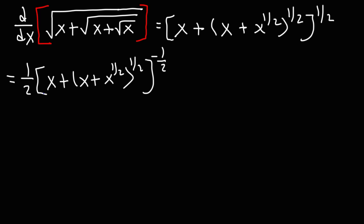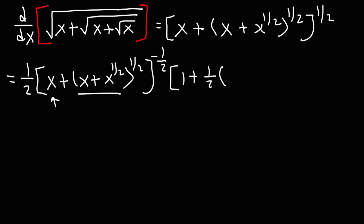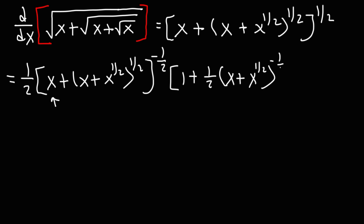The next thing we need to do is find the derivative of the inside function. The derivative of x is going to be one. Then the derivative of this expression — we need to move the one half to the front, so it's going to be one half times what we see on the inside, keeping that part the same, then subtracting by one: one half minus one, that's going to be negative one half.